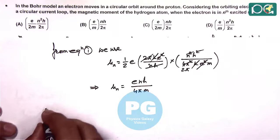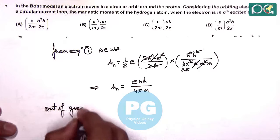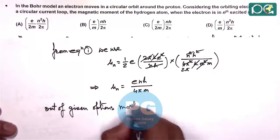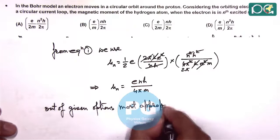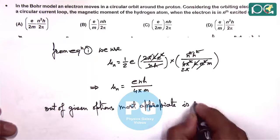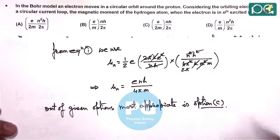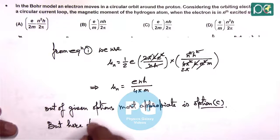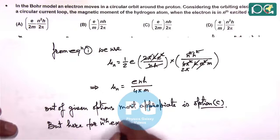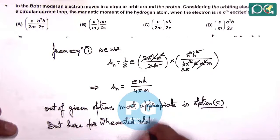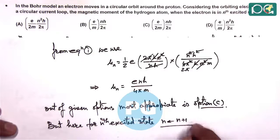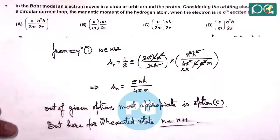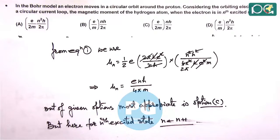So here, out of given options, option C most appropriate is option C, which we will choose as answer. But actually, we can write, for nth excited state if we talk, then for nth excited state, n must be replaced by n plus 1, which is not given directly here. But still out of the given options, this option C is matching, so we will choose option C as the correct answer to this question.